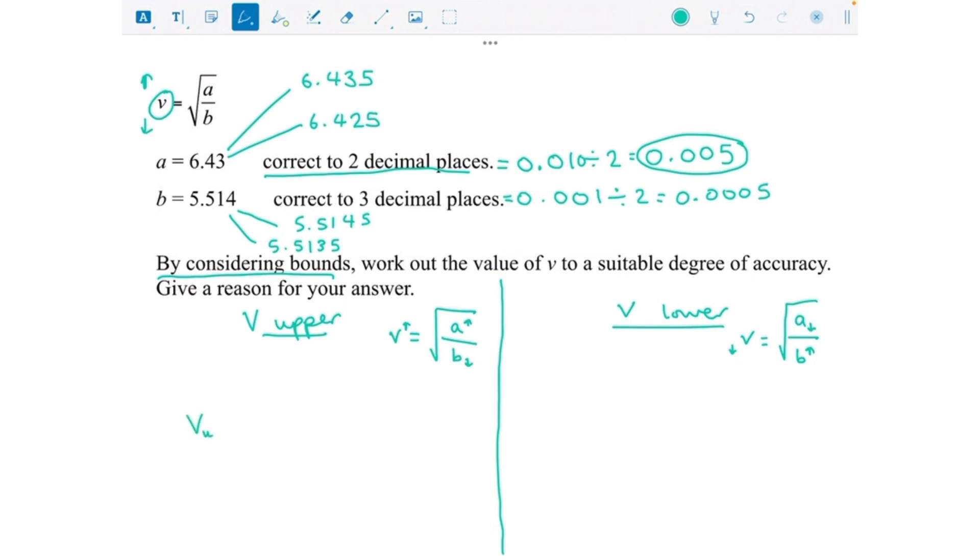So v upper is the square root of 6.435, because that's the biggest we can make a, divided by 5.5135, because that's the smallest we can make b. And v lower equals the square root of 6.425 divided by 5.5145, because that's the biggest we can make that.